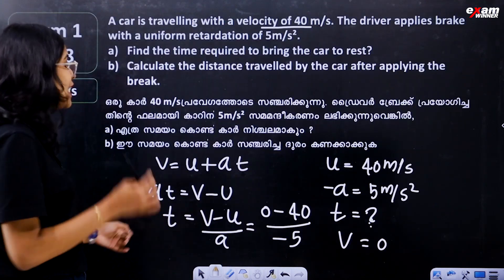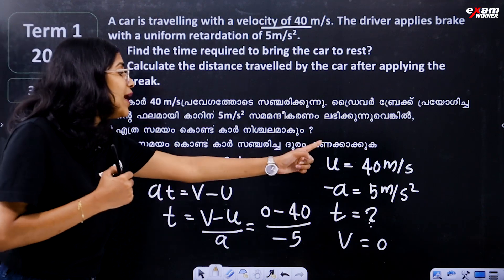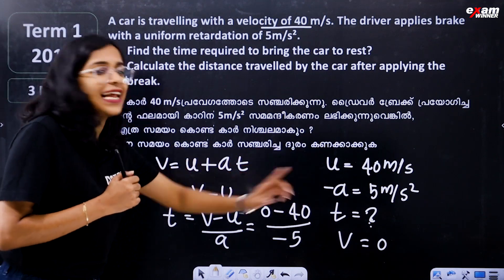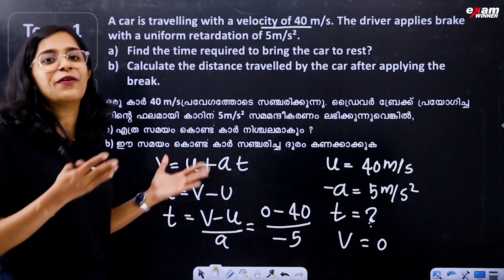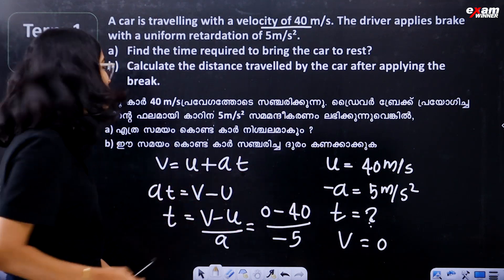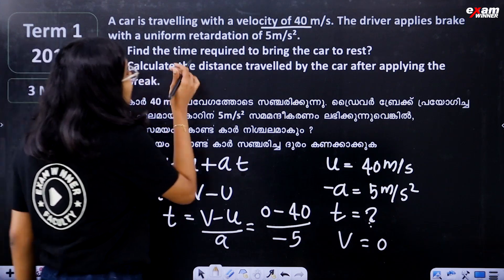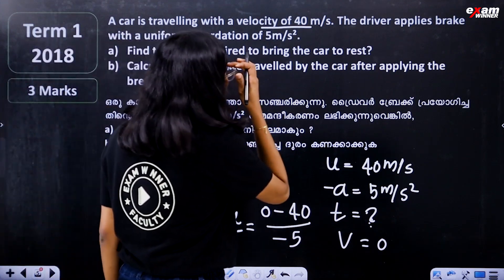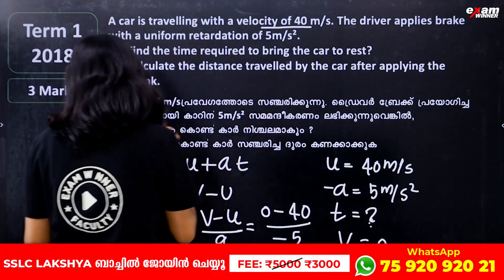Time T equals 8 seconds. To find the time, we used V, U, and A with the first equation of motion: V equals U plus AT.